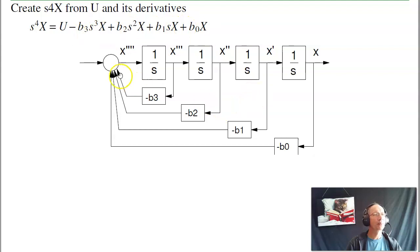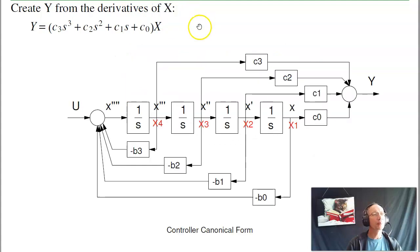You'll see this block diagram. Now add the numerator polynomial. The numerator is made up of x and its derivatives. Here's x, here's sx, here's s squared x, here's s cubed x. Add them all up, I get y. So this is called controller canonical form.